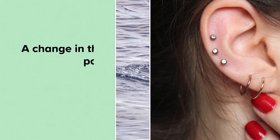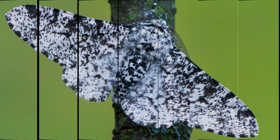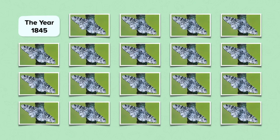So let's now look at the change in these characteristics over time. Here is a species of moth called the peppered moth, which is found in the UK. In the UK city of Manchester in the year 1845, all the observed peppered moths looked like this one — white with black speckles. This colouration is an inherited characteristic.